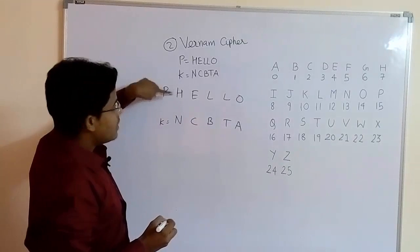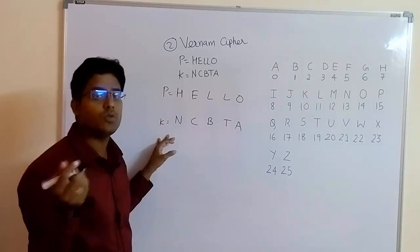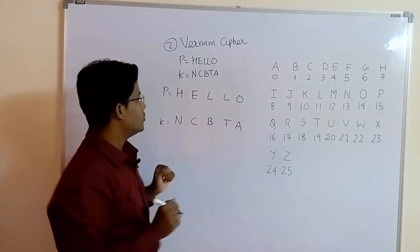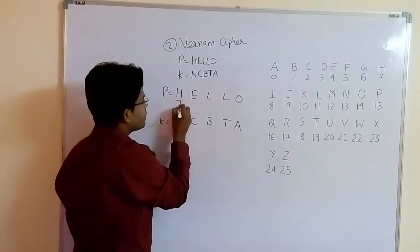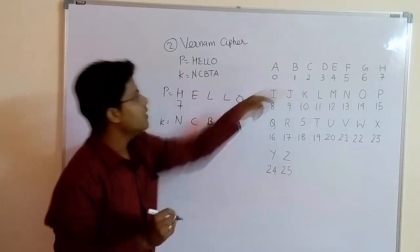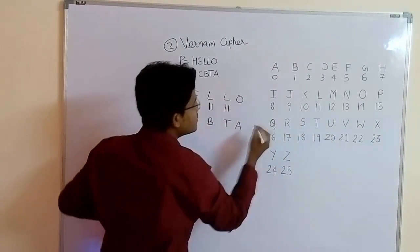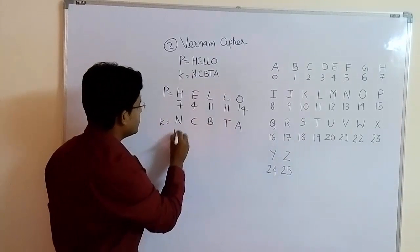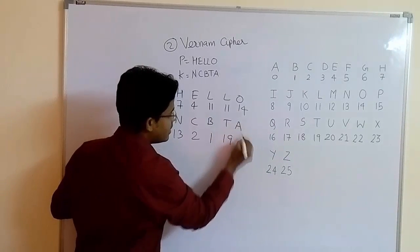Leave some space and write the key: N, C, B, T, A. These two rows of alphabets should be aligned — you will soon understand why. Now write the number associated with each alphabet from the table: H is 7, E is 4, L is 11, L is again 11, O is 14. For the key: N is 13, C is 2, B is 1, T is 19, and A is 0.